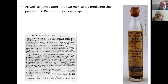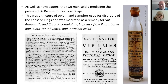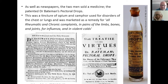Interestingly, as well as the newspapers, these two men actually sold a medicine — Dr. Bateman's Pectoral Drops. It was a type of tincture of opium and camphor — basically a drug mixed with alcohol, so it's got to be good. It was used in disorders of chest and lungs, marketed as a remedy for rheumatic and chronic complaints, pains of the limbs, bones and joints, influenza and violent colds. It's one of those quack medicines, but it goes to show that one of the reasons they wanted to print the newspaper was free advertising for this medicine.